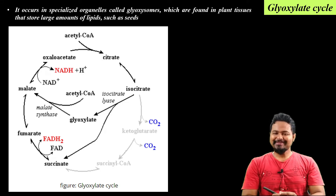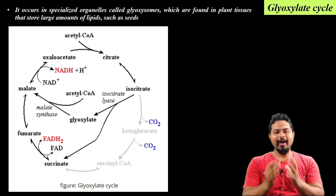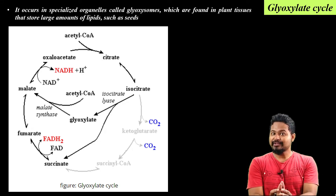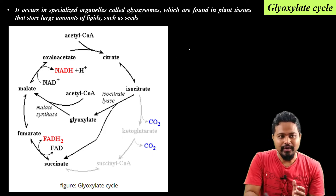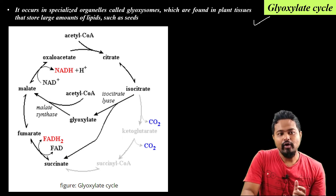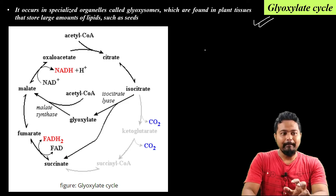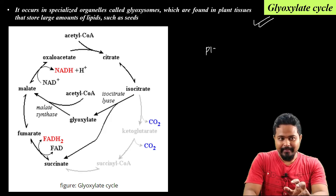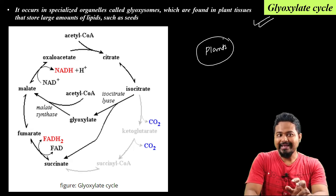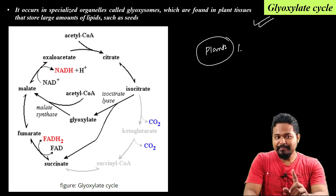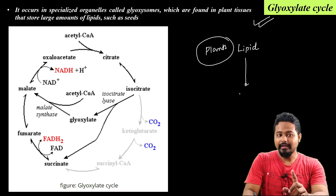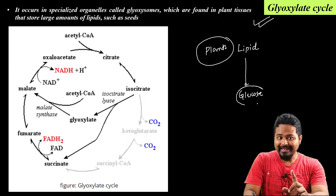Hello students, welcome back to my class. I am Dr. Rajiv Bwara, and today I am going to discuss the topic of the glyoxylate cycle. This cycle is important because plants use this cycle to convert lipids into glucose, and this cycle is an intermediate step.